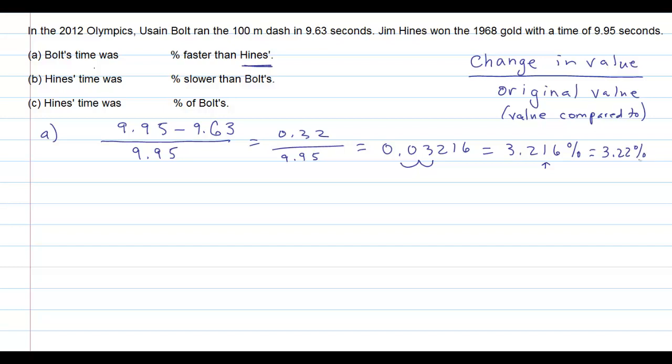Part B will be the same setup, but now I'm looking at comparing it to Bolt's time. I'm still interested in the difference, how much Hines' time was slower than Bolt's time, so my numerator in this case is actually not going to change. I'll get my percent in decimal form, and then finally I'll round. I get that the percent that Hines' time was slower than Bolt's is 3.32 percent.